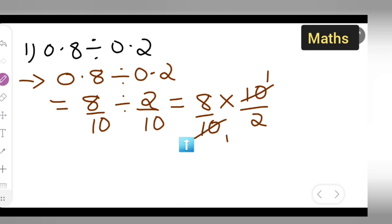10 ones are 10, you can cancel. 2 ones are 2, 2 fours are 8. So basically, your answer is 4.